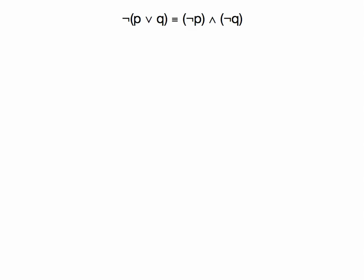Hello there. In this quick screencast, we're going to do three examples where we use truth tables to establish whether two propositions are logically equivalent or not. Logically equivalent statements have the same truth values under all the same conditions, so if we order the rows of their truth tables the same, we're going to see the final columns always come out the same.